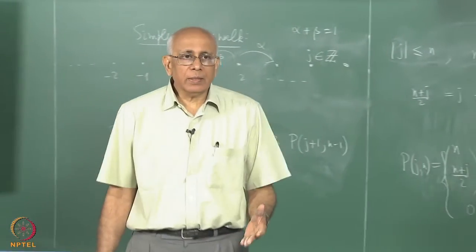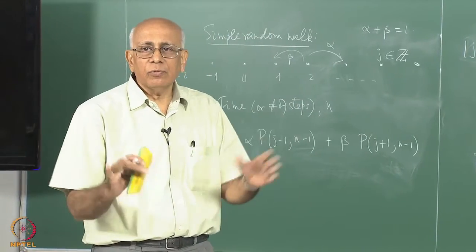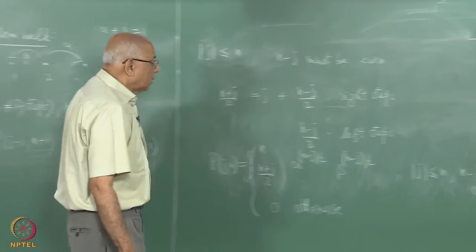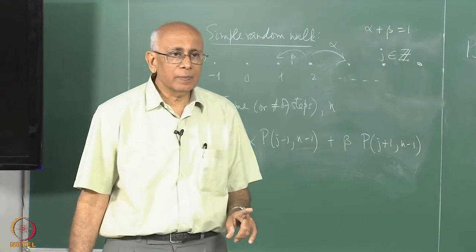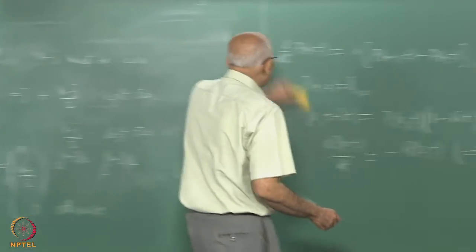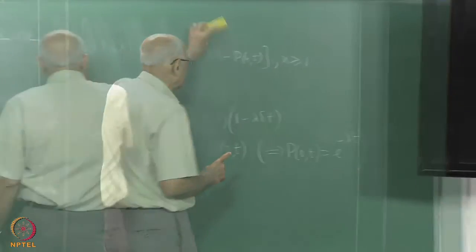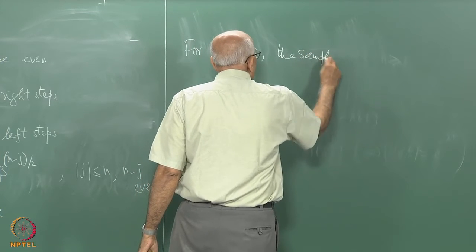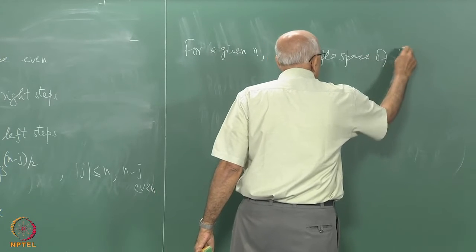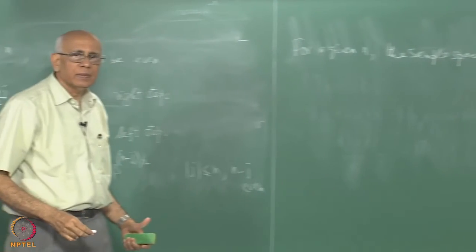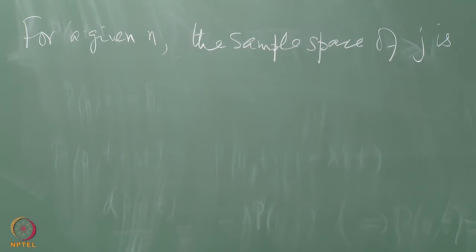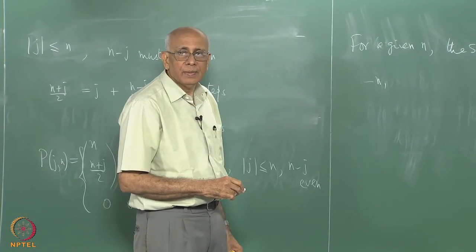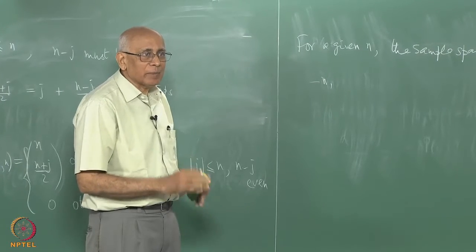So the simple biased random walk on a linear lattice is essentially a binomial distribution when expressed in terms of k, the number of right steps. The generating function for j is f(z) = (alpha*z + beta/z)^n. For alpha equal to beta the average displacement is 0. With bias, the mean value of j is proportional to (alpha minus beta) — acting like a drift velocity — so the mean displacement is n*(alpha minus beta).